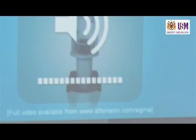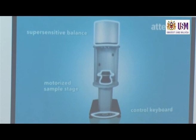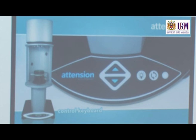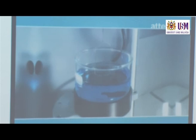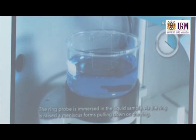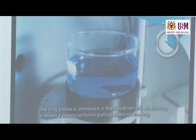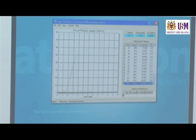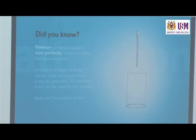Let's watch this video. A Sigma force tensiometer is equipped with a super-sensitive balance, a motorized sample stage, and a control. A platinum ring probe hung on the balance is used to measure the surface tension of the liquid on the sample stage. The ring probe is immersed in the liquid, pulling down on the ring. The force exerted on the meniscus is recorded and used to calculate surface tension, and results are plotted by the software. Platinum is used because it wets perfectly. Any shape of probe can be used as long as it has regular geometry.